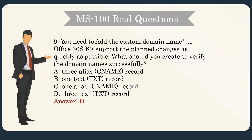Question 9. You need to add a custom domain name to Office 365 to support the planned changes as quickly as possible. What should you create to verify the domain names successfully? A. Three alias records. B. One TXT record. C. One alias record. D. Three TXT records. Answer: D.